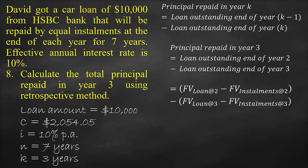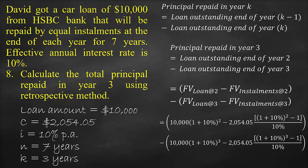The principal repaid in Year 3 is equal to: open bracket, loan amount of $10,000 multiplied by open bracket (1 plus the interest rate of 10%) close bracket, to the power of the number of paid periods minus 1 period, which is 2 years, minus the periodic instalment of $2,054.05 multiplied by open second bracket (1 plus the interest rate of 10%) close the second bracket, to the power of 2 minus 1, close the first bracket, and divide all by the interest rate of 10%, close the bracket.